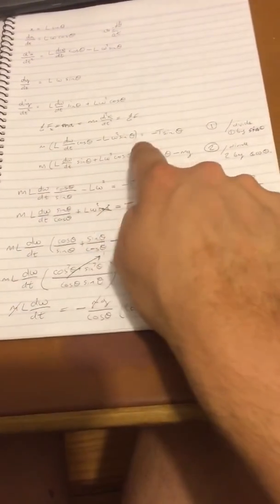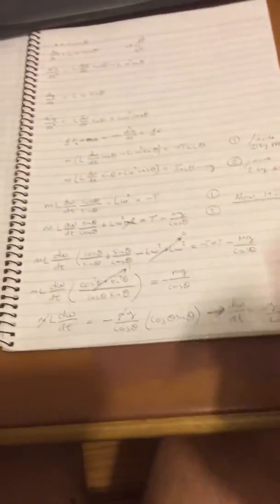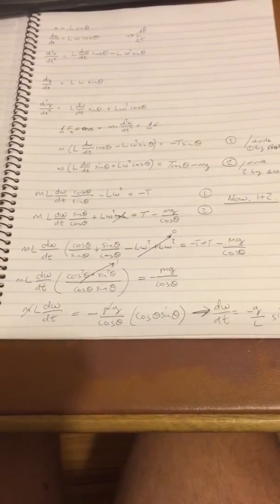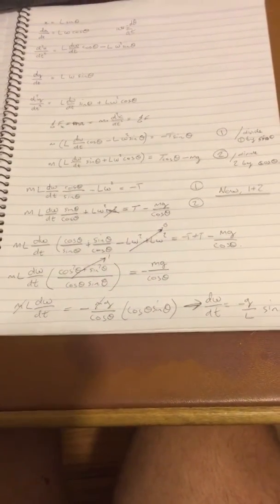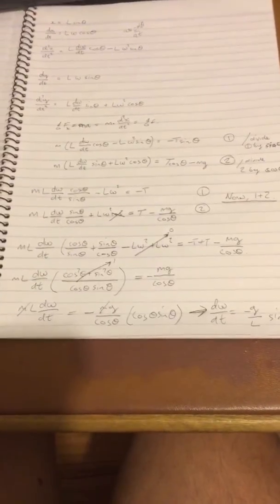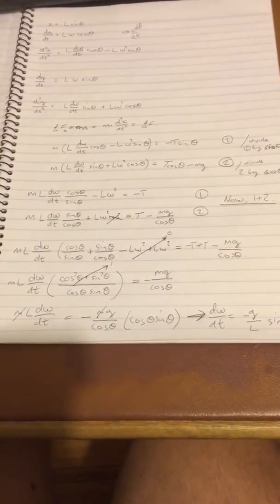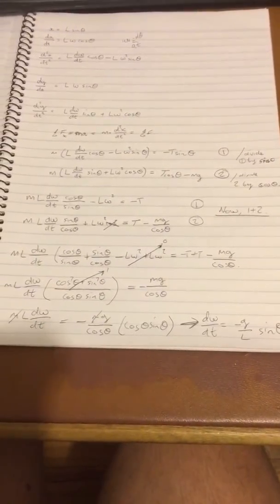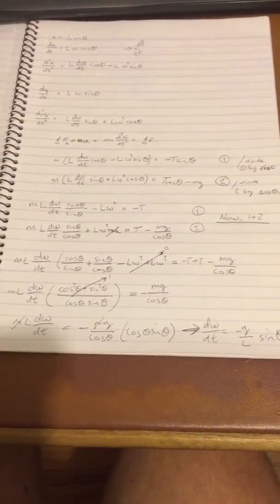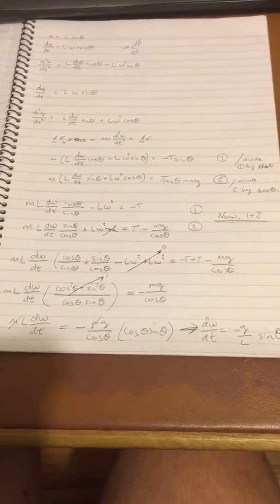M times du/dt equals the sum of forces. The only force in the x direction is the tensile force in the rope holding the ball up. And you might want to think about where that minus sign came from. Do the same for the sum of forces in the y direction. So m times dv/dt equals T cosine theta minus mg.